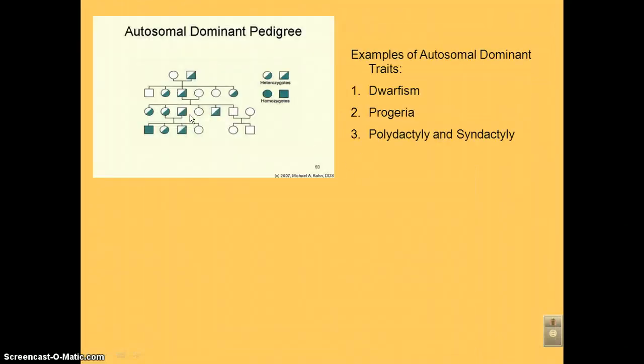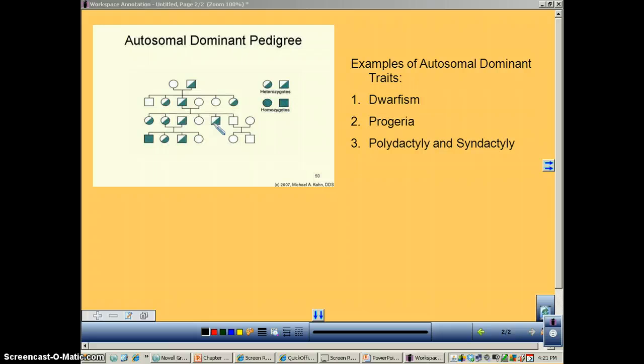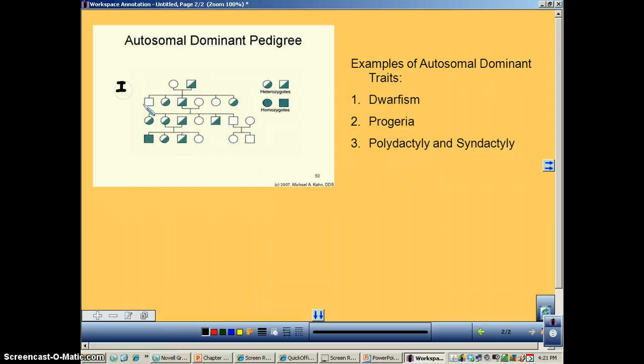Now, this is a pedigree, and what it doesn't show in this one is different generations. So you see this one up here? That's generation number one. This row here, generation number two. And so on and so forth. And this would be individual one. So you'd be Roman numeral one, and then an Arabic numeral one, that individual two. Second generation, one, two, three, four, five. All right? Got it?